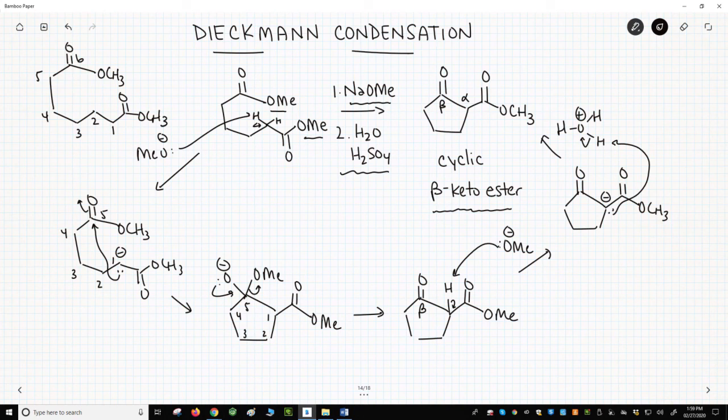The rings include a beta-ketoester and go through an enolate intermediate, just like the Claisen condensation.